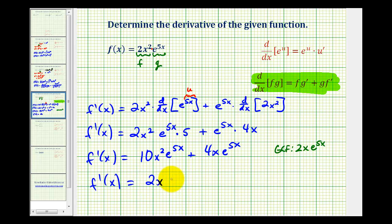So if we factor out 2x e to the 5x, let's see what's left. We'd have a factor of 5x left here, and we'd have a factor of 2 here.